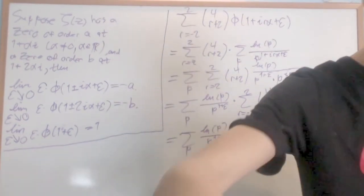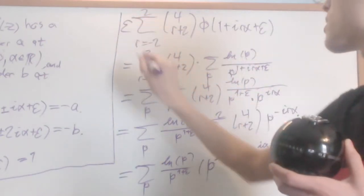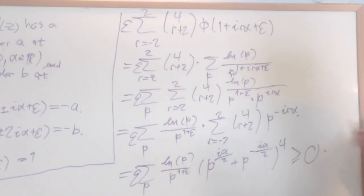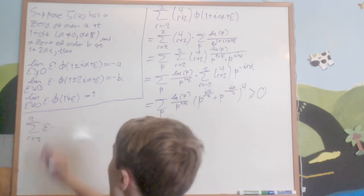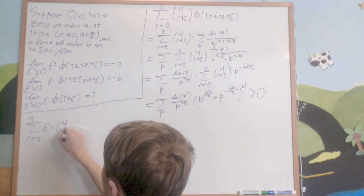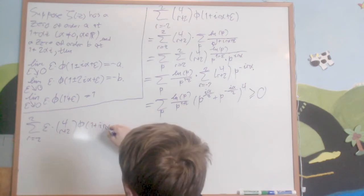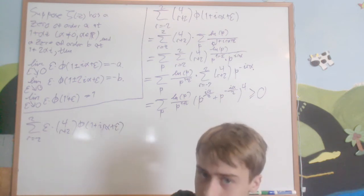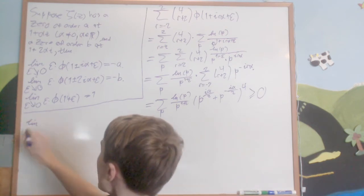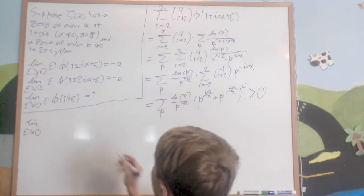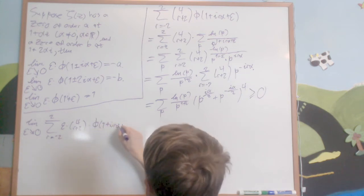Now the crazy part: I multiply everything by ε, so I look at the sum from r = −2 to 2 of C(4, r+2) times ε times φ(1 + irα + ε), and then take the limit as ε → 0. This limit must also be ≥ 0 since the expression before the limit was ≥ 0.